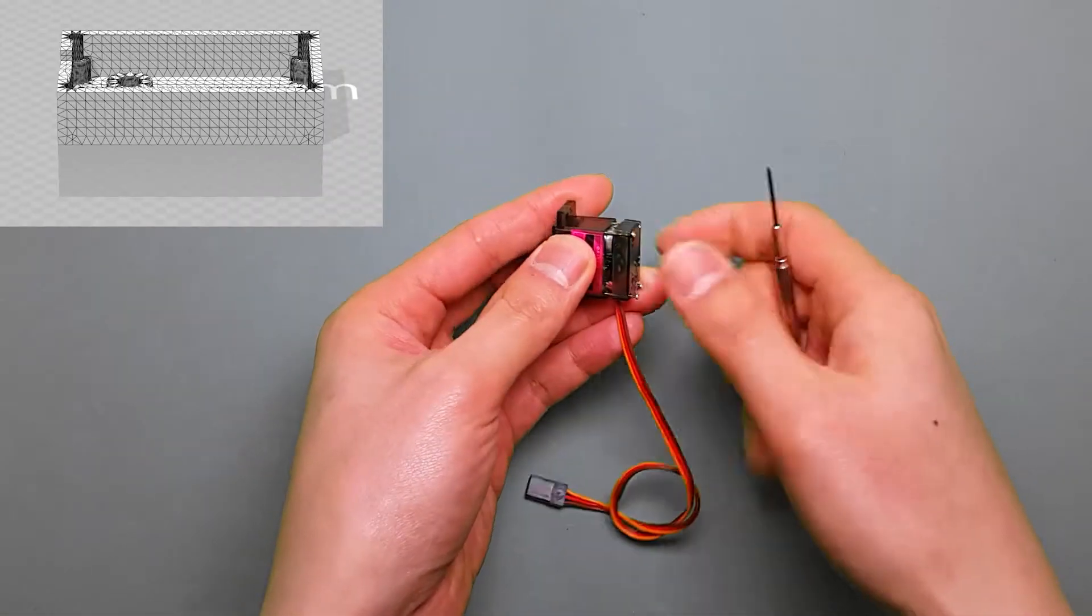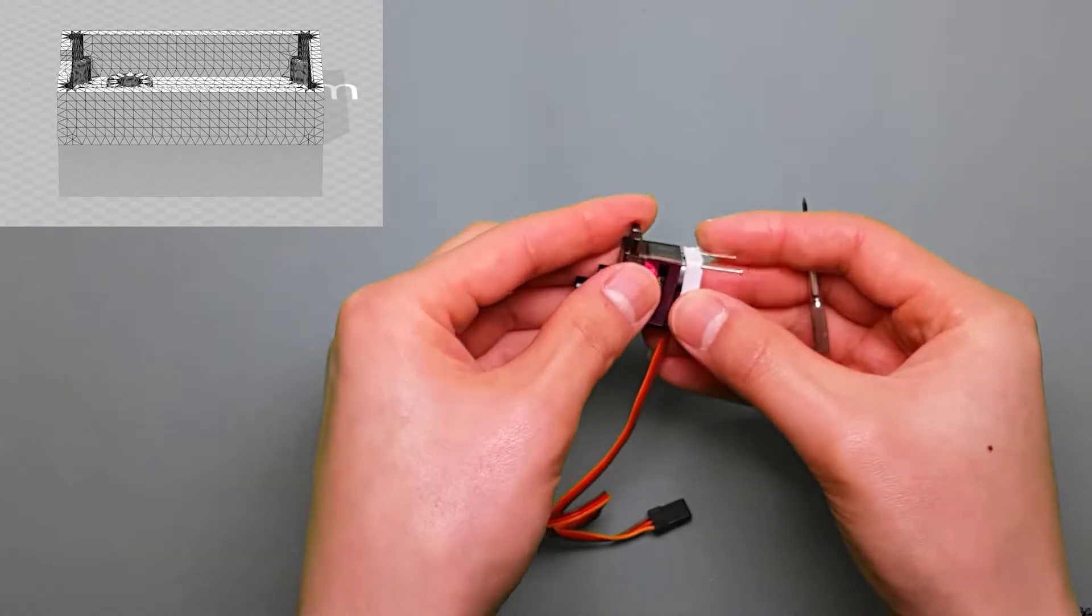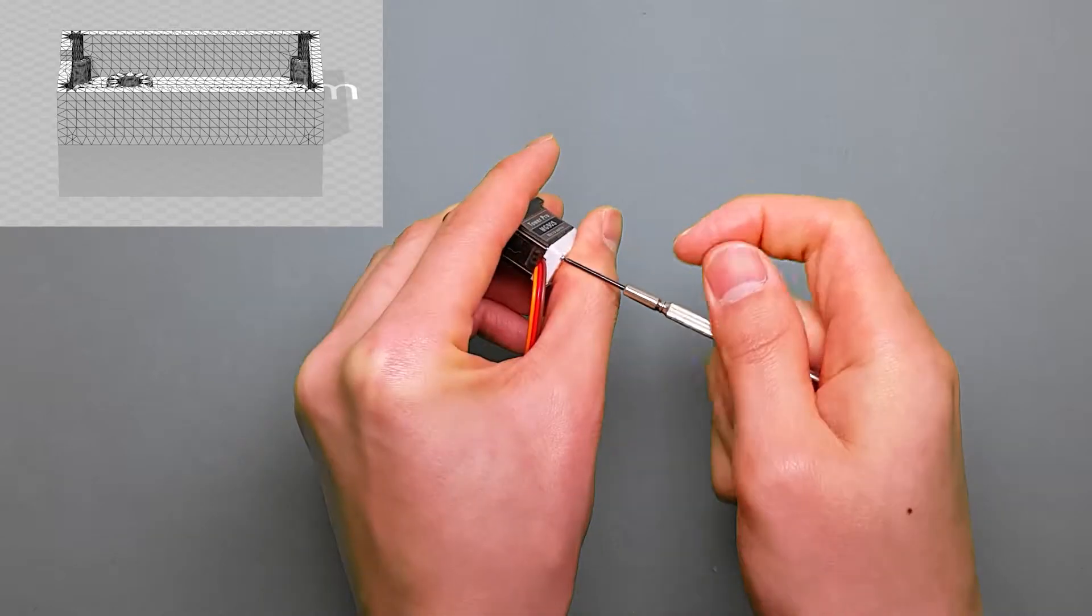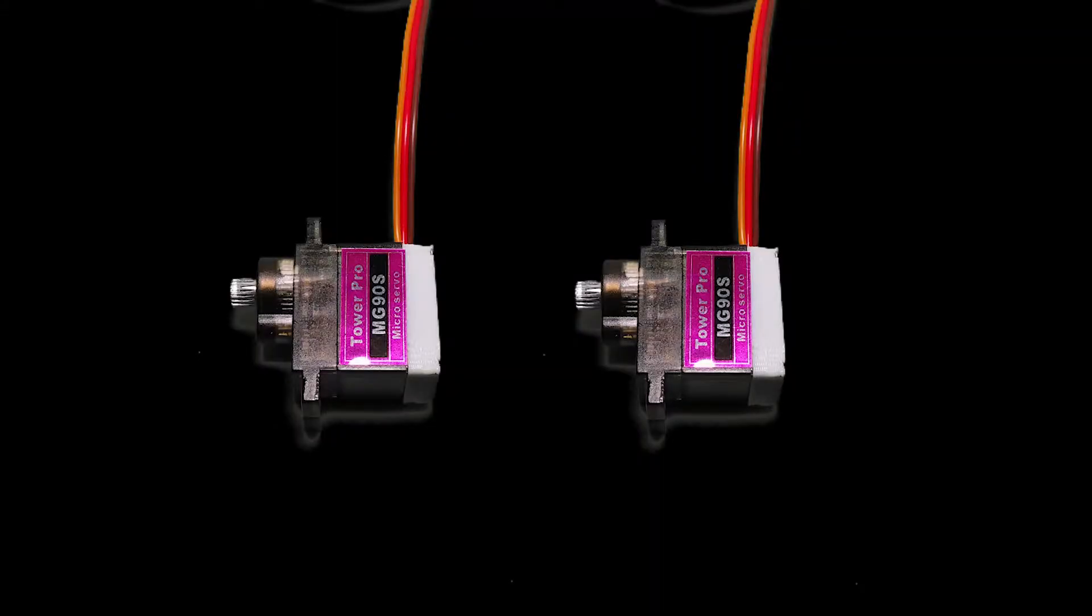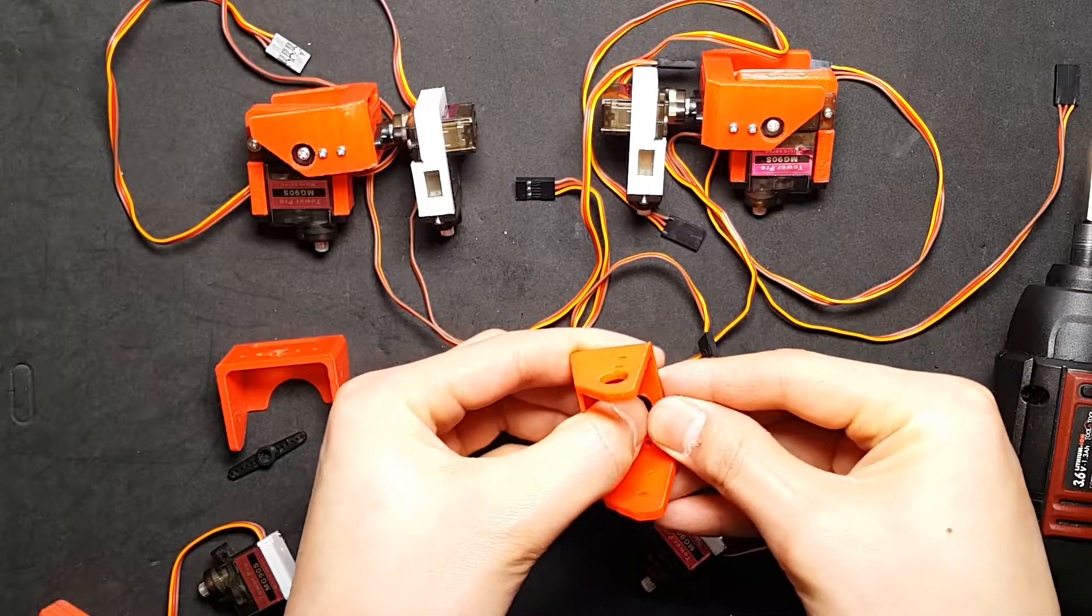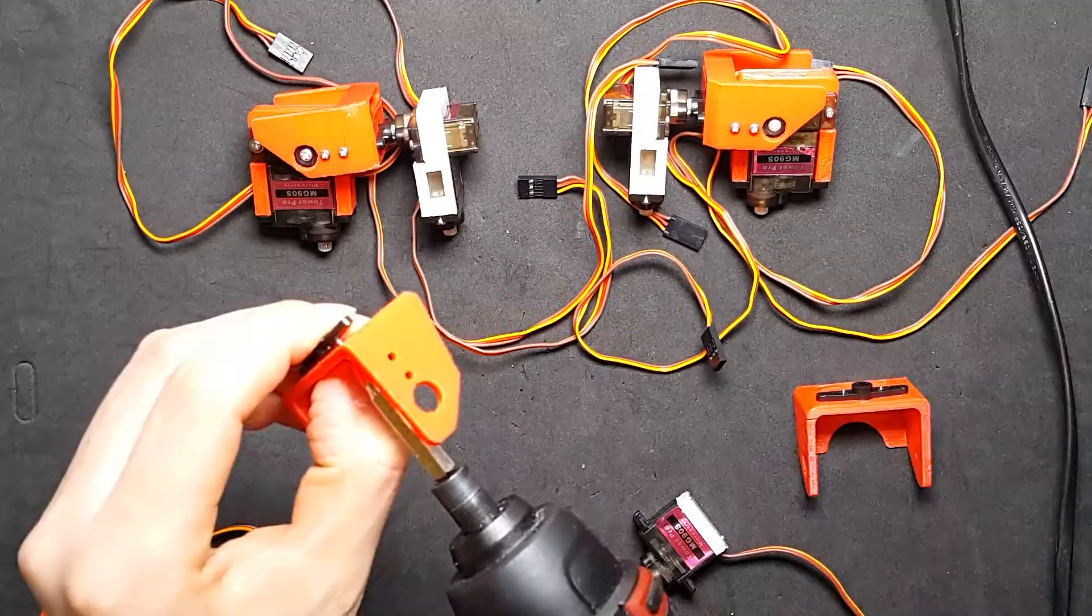The elbow motors also need modification. Attach the cover. We need two motors modified. Assemble two elbows. The left arm and right arm are different. Please check the video carefully.